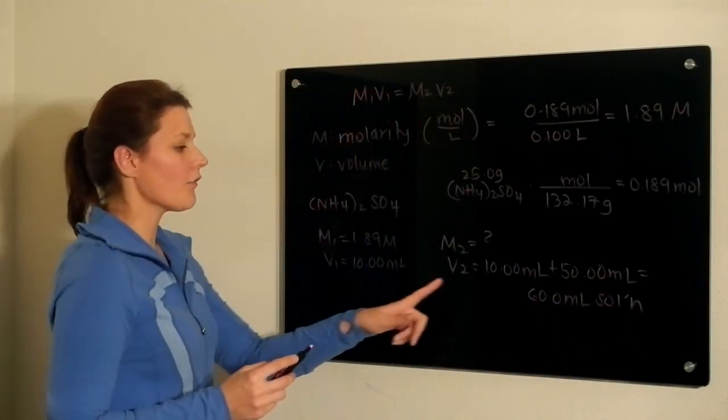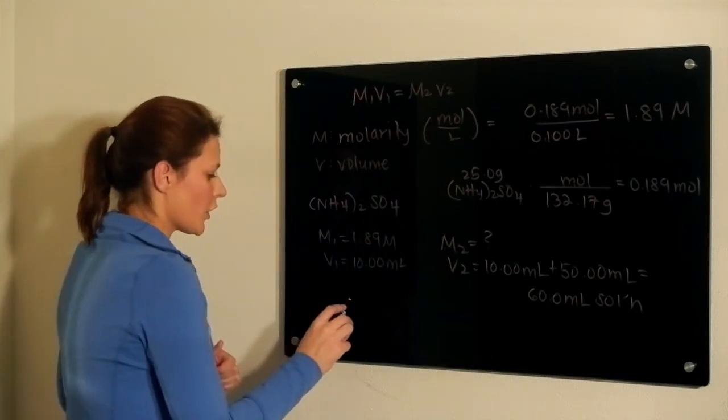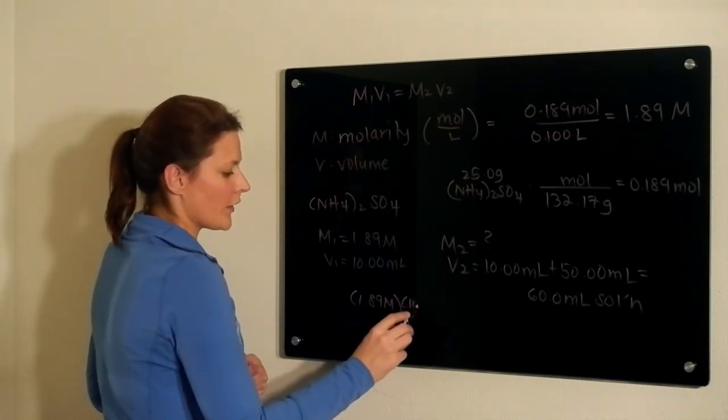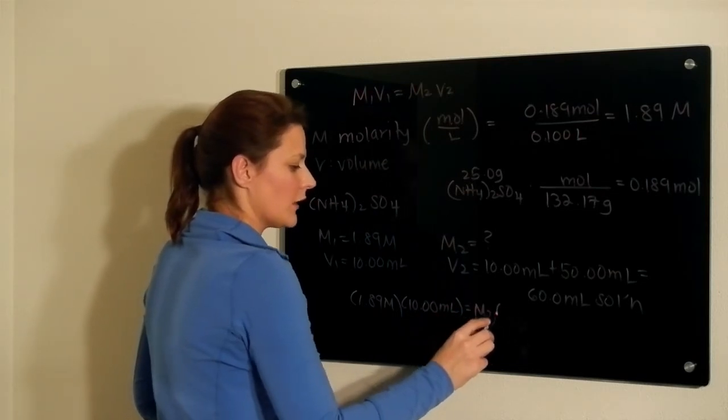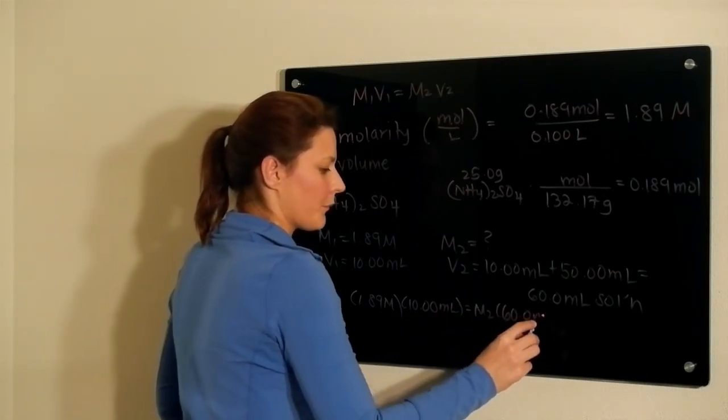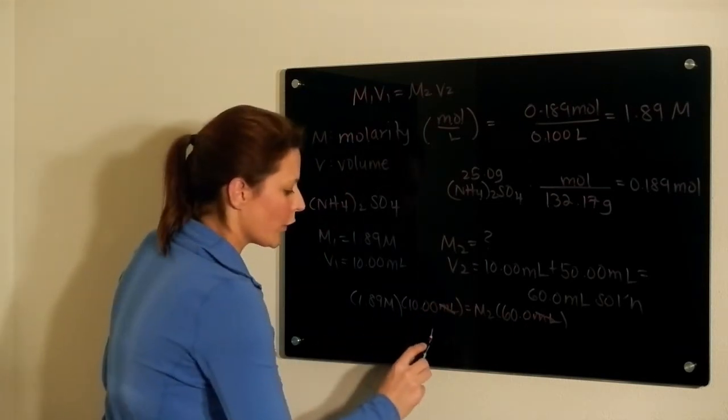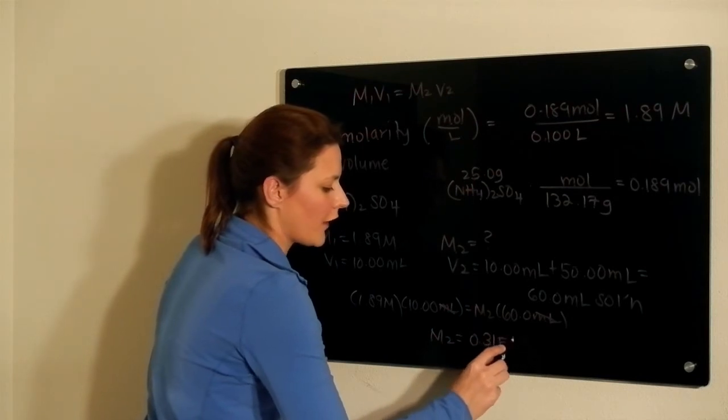Now we have all the variables that we need in order to solve for M2. So we have M1, which is 1.89 molar, times V1, which is 10 milliliters, equals M2 times V2. Here you see the units cancel out. When you solve for M2, you get an answer of 0.315 molar.